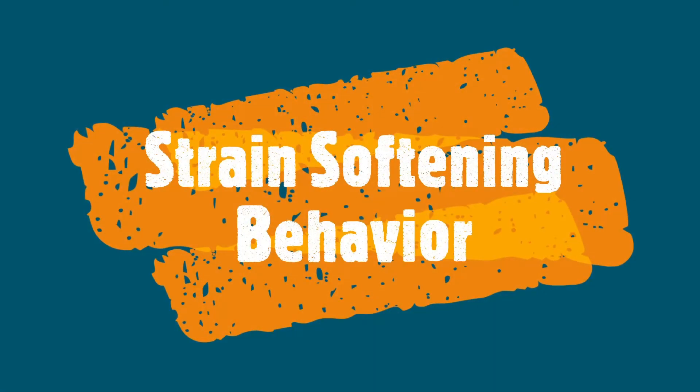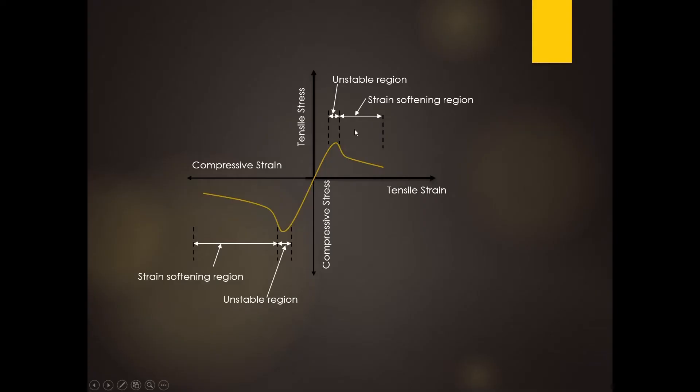This shows the strain softening behavior of material - a typical concrete material subjected to tensile and compressive unidirectional load. Once the yield point is reached, the strain continues increasing but the stress at that point decreases. This region is called the strain softening region of a material.